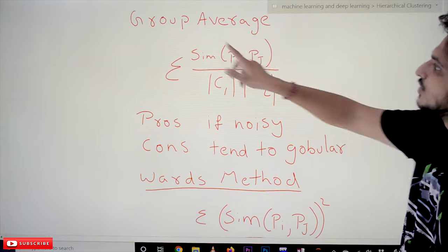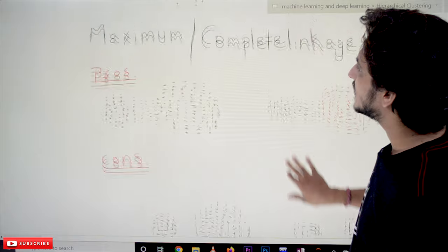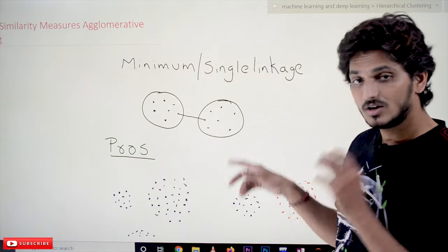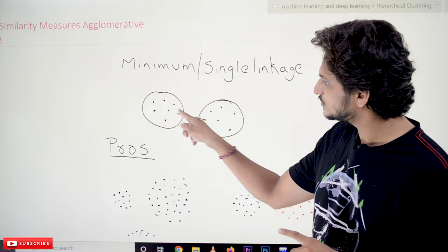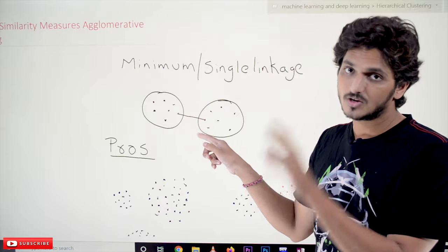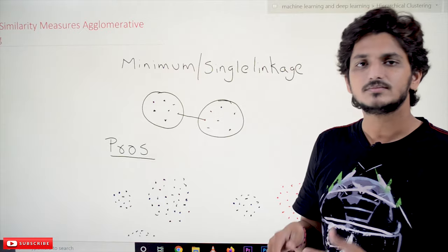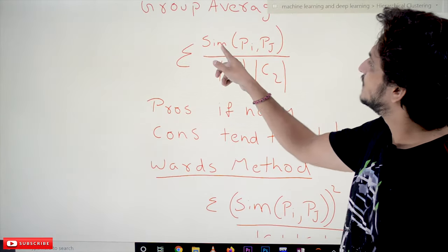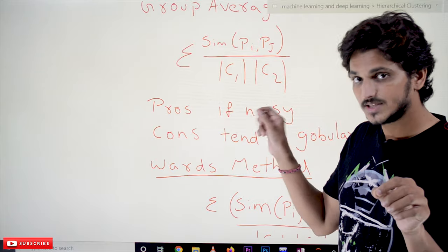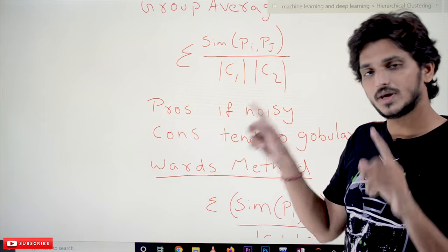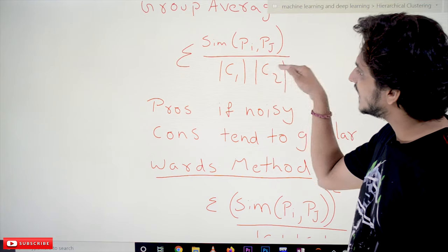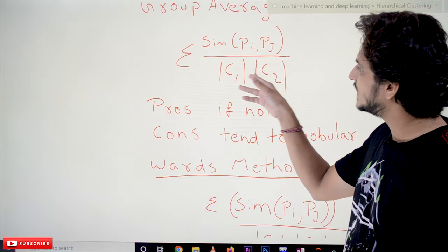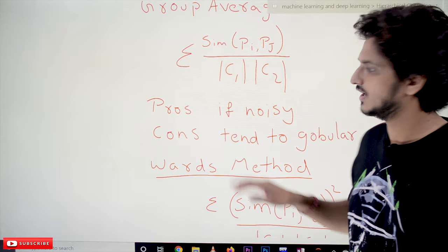The next method is group average. Group average means we calculate the average of the distances between all the data points across the two clusters. We calculate the distance between every pair of points — this point to that point, this point to that point, and so on for all combinations — and then average them. The equation is: similarity = sum of distances d(Pi, Pj) for all Pi in cluster C1 and Pj in cluster C2, divided by the number of data points in C1 multiplied by the number of data points in C2. This is how group average linkage is calculated.